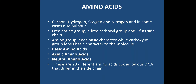Let us start with amino acids. As the name suggests, amino acids contain two different types of functional groups: the amino group (NH2) and the acid group (COOH). These are the basic monomeric units of proteins, found in different varieties. They mainly consist of carbon, hydrogen, oxygen, and nitrogen, and in a few cases, sulfur as well.